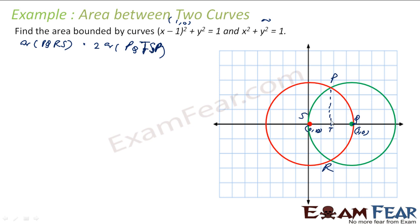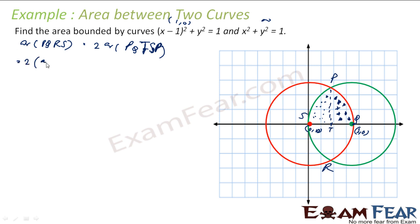The challenge now is how to find this area. This total area is nothing but the area of the dotted region plus the area of the star region. So the required area equals 2 times the area of region PST (dotted region) plus the area of region PTQP (star region).